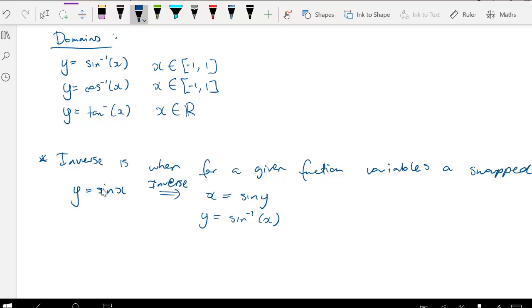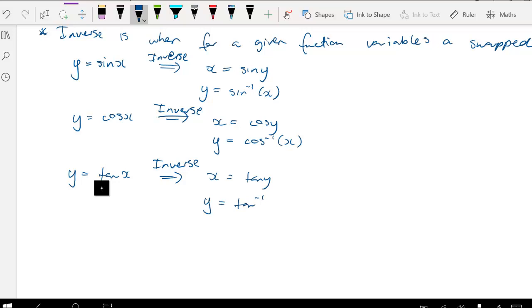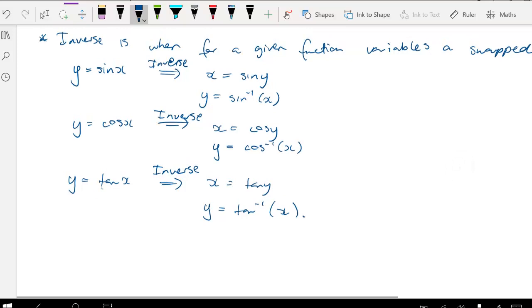For cos, when we take that inverse, we get x equals cos y. And therefore, y is arc cos of x. And for tan, when we take the inverse, we get x equals tan y. And therefore, the inverse is y equals arc tan of x. This can be done for any type of function. In this case, with the inverse trig functions, we're inversing the trig components.